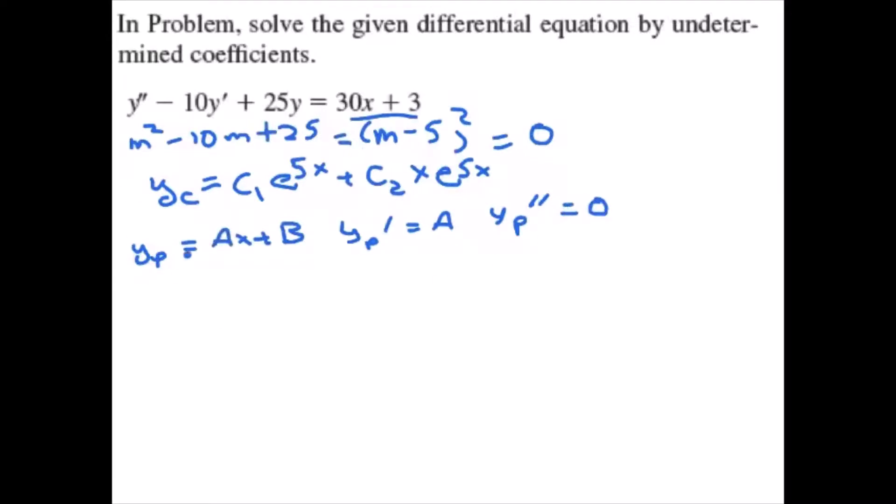Plugging that into our equation, we get 0, negative 10y of p, so negative 10a, plus 25y, so that's 25ax plus 25b.